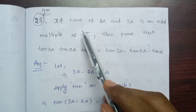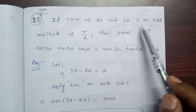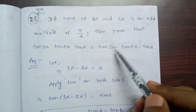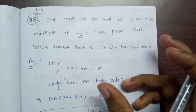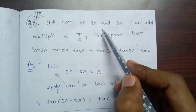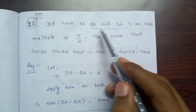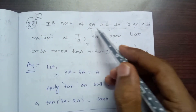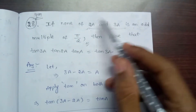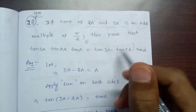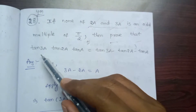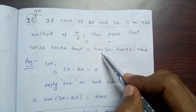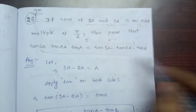Problem 28: If none of 2a and 3a is an odd multiple of pi by 2, then prove that tan3a · tan2a · tana is equal to tan3a minus tan2a minus tana. So we will have tan3a · tan2a · tana on the left side, equal to tan3a minus tan2a minus tana on the right side.